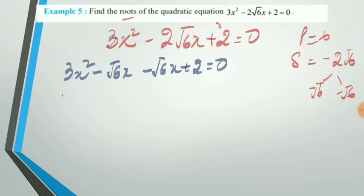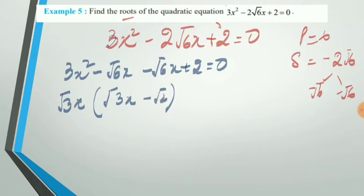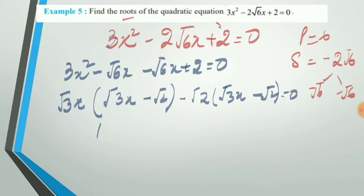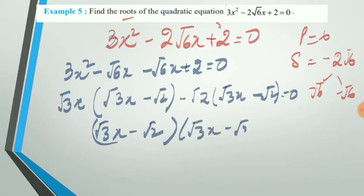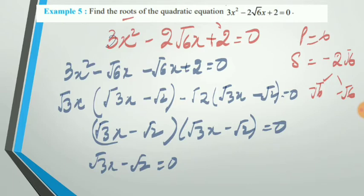From the first two terms, I take out √3·x as common and I am left with (√3·x - √2). From the last two terms, I take out √2 common and I am left with (√3·x - √2) again. This simplifies to (√3·x - √2)(√3·x - √2) = 0, meaning both factors are identical, so we get only one distinct root.